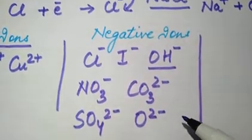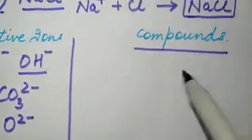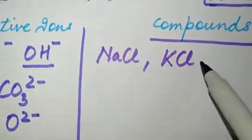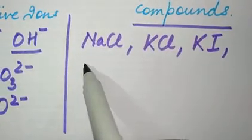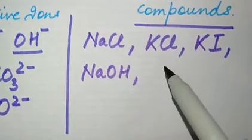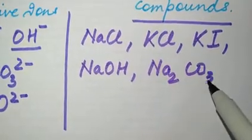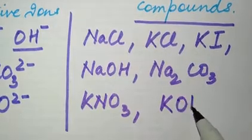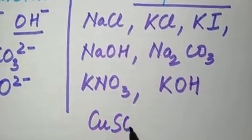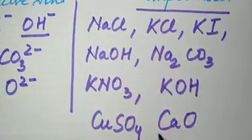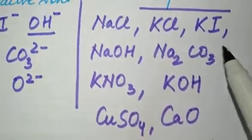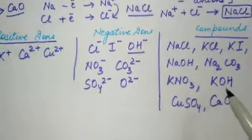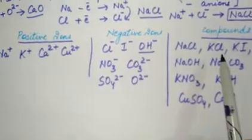You need to learn the ionic compounds formed by combining positive and negative ions. Examples include: NaCl, KCl (potassium chloride), KI (potassium iodide), NaOH (sodium hydroxide), Na₂CO₃ (sodium carbonate), KNO₃ (potassium nitrate), KOH (potassium hydroxide), CuSO₄ (copper sulfate), and CaO (calcium oxide). Learn the positive ion, negative ion, and the compound they form.